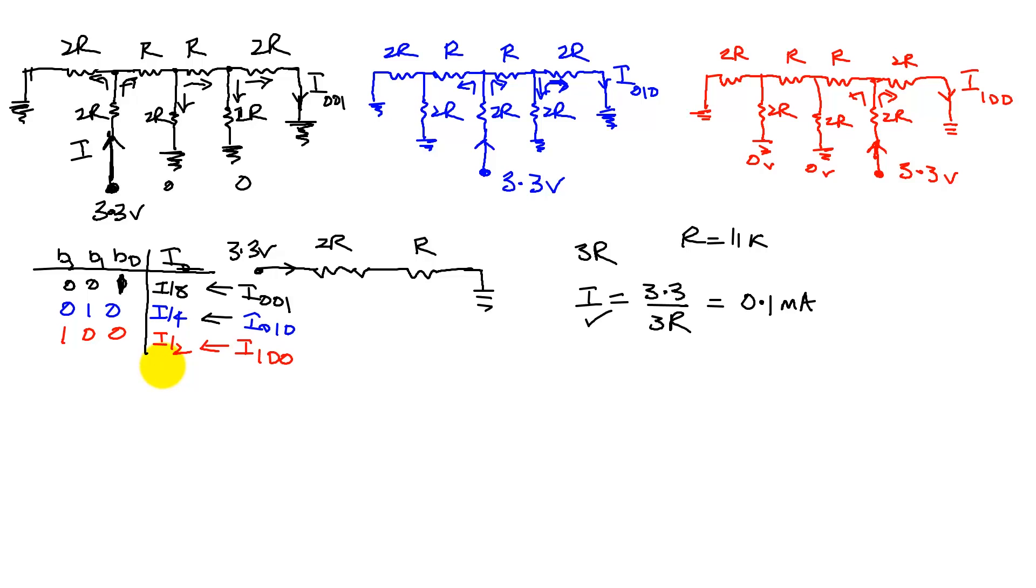So the law of superposition then tells us that if I had a different combination, let's say I had a combination which was 011.